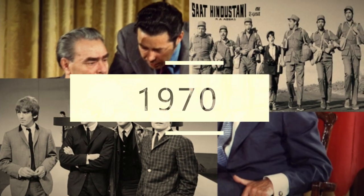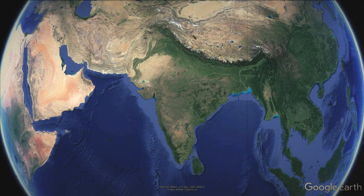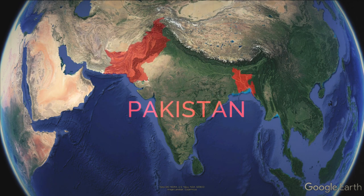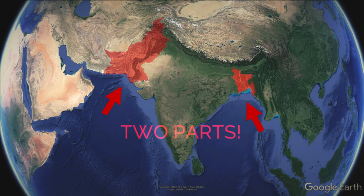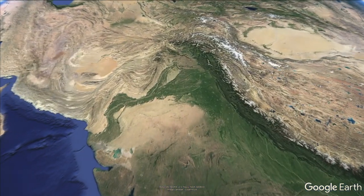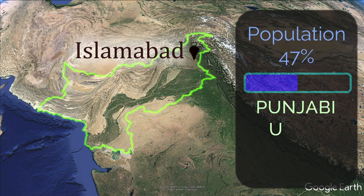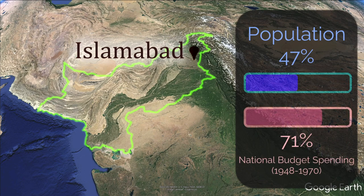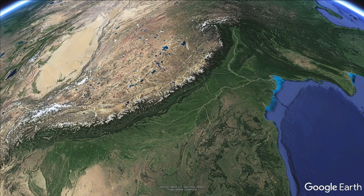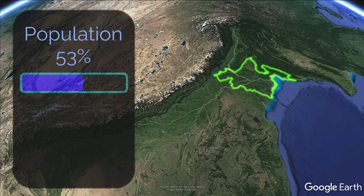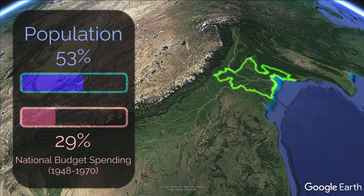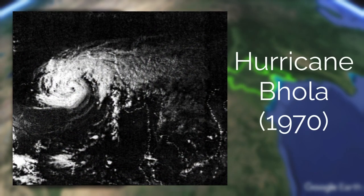The year is 1970. In the Indian subcontinent, tensions are on the rise. Pay closer attention to the country of Pakistan. Here you had West Pakistan, which had the capital, 47% of population speaking Punjabi, Urdu, Sindhi and Pashto mainly, and about 71% of the national budget spending. Now this was East Pakistan — it had 53% of the total population, yet only 29% of national budget spending. They spoke Bengali mainly and had recently suffered a devastating cyclone which was horribly mismanaged. You know where this is going.